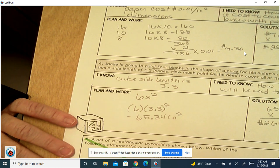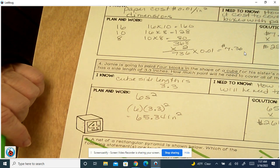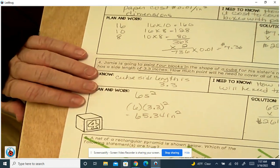And then number five is lateral surface area, so we won't do that one. Any questions?